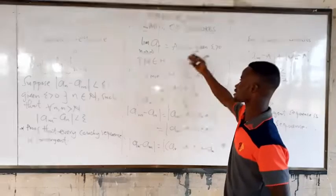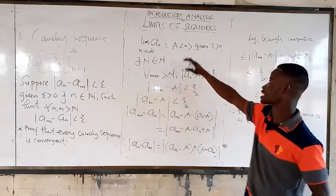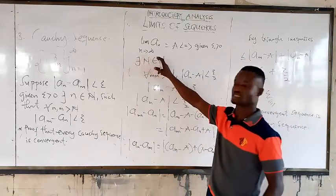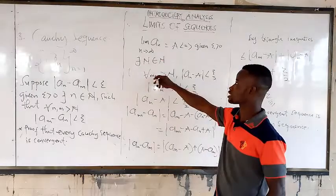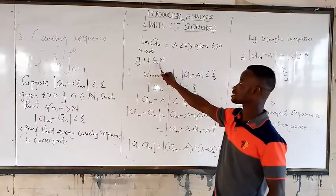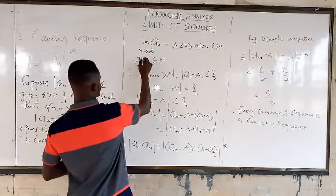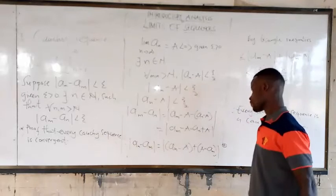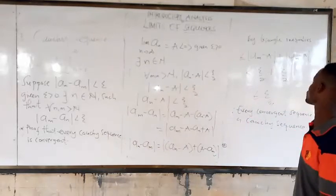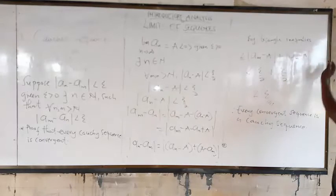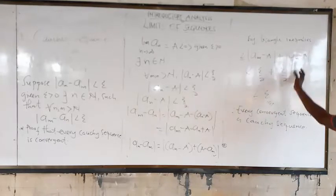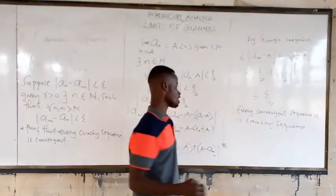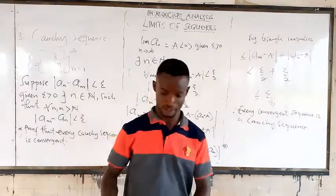Now let's prove that every Cauchy sequence converges. We start the proving. When N approaches positive infinity, there exists a small n belonging to all natural numbers. By triangle inequalities, we can reduce the terms, and finally we get the result — meaning that every convergent sequence is a Cauchy sequence.